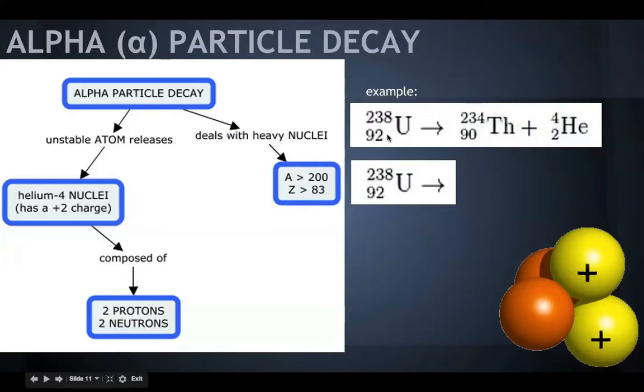An example of this, uranium-238, it decays into thorium-234 and then this He-4, this helium-4 particle, this alpha particle. So basically what happens, this uranium becomes, that's what this arrow means, it's turning into, it's becoming, it's going through a nuclear reaction. So this is the before, uranium-238, and then it breaks down into thorium-234 plus an alpha particle. This He is an alpha particle.